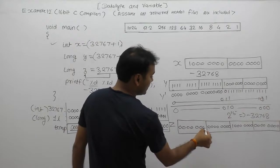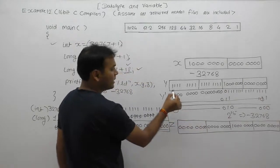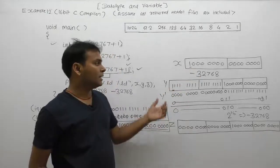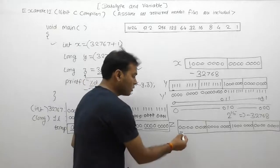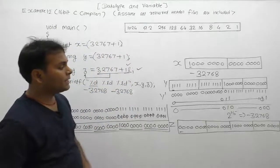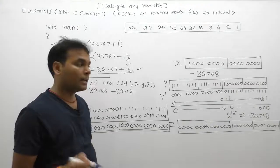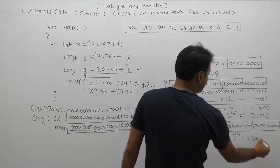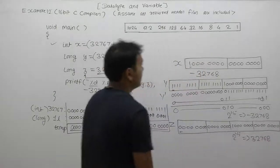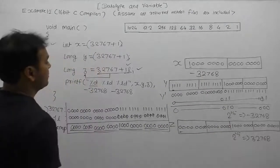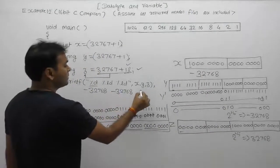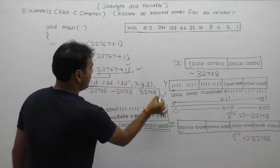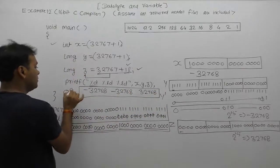Now check this: in the previous cases, x and y had sign bit 1, so they were negative — results were negative. But for z, it's positive. The decimal value is directly 2 to the power 15, which is equivalent to 32768. So the value of z is 32768. The final output of the printf functions gives: x = -32768, y = -32768, z = 32768. This is the output of this program.